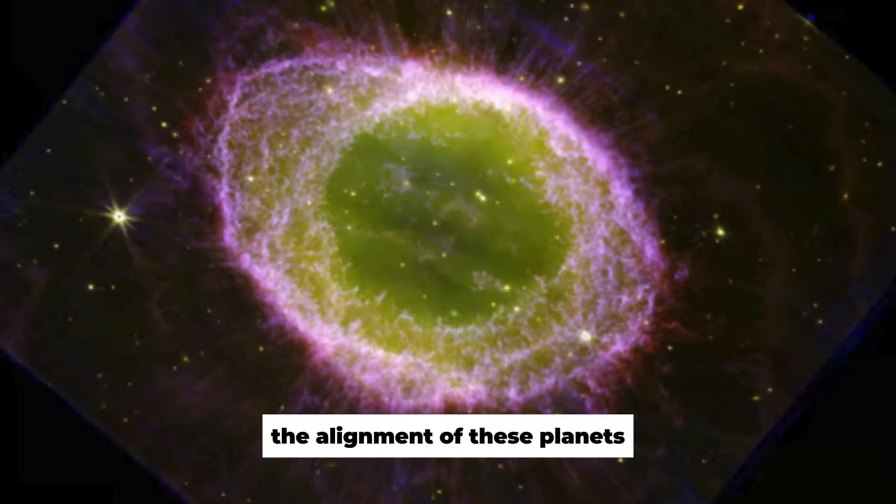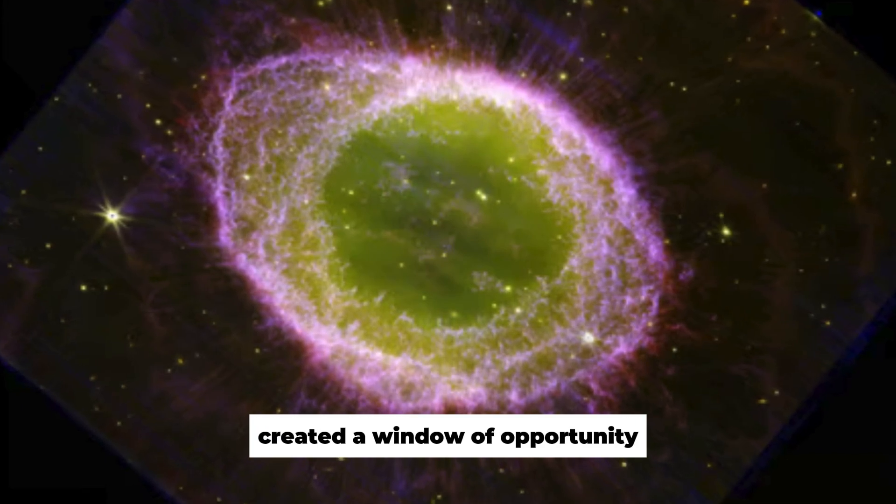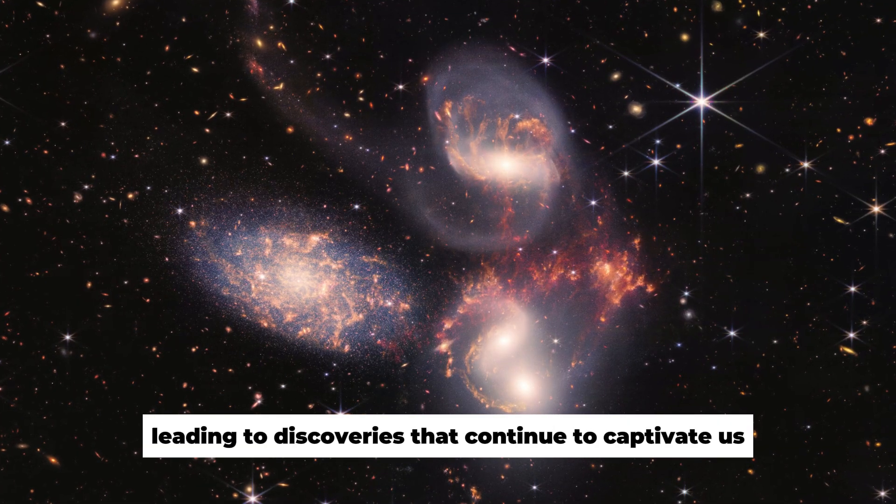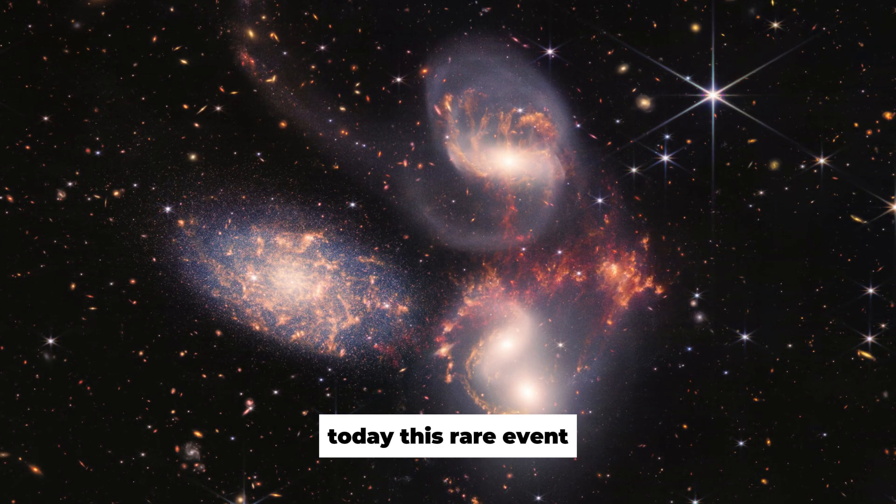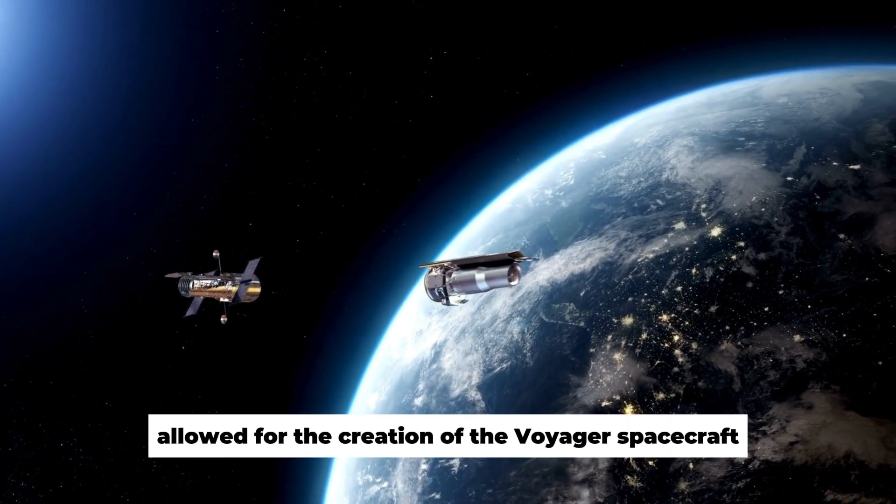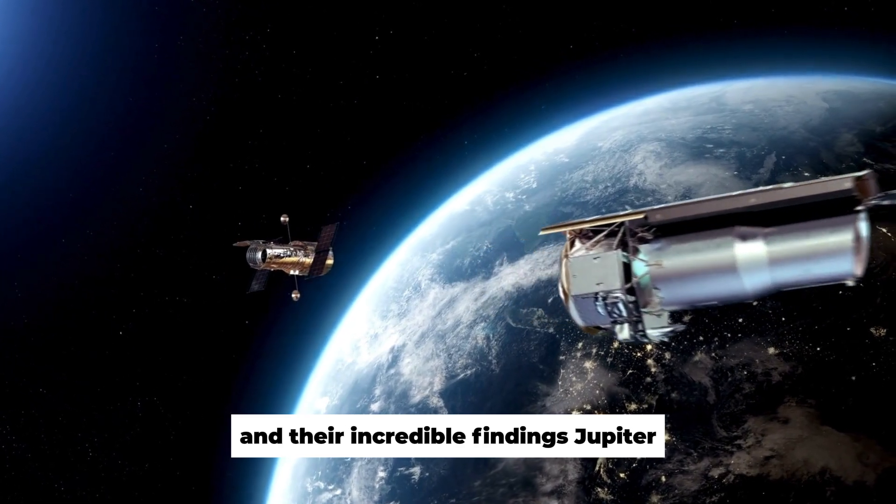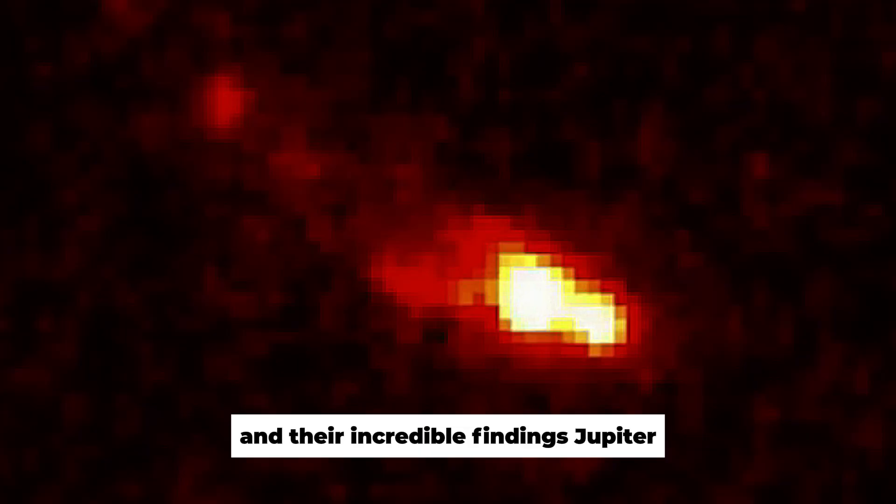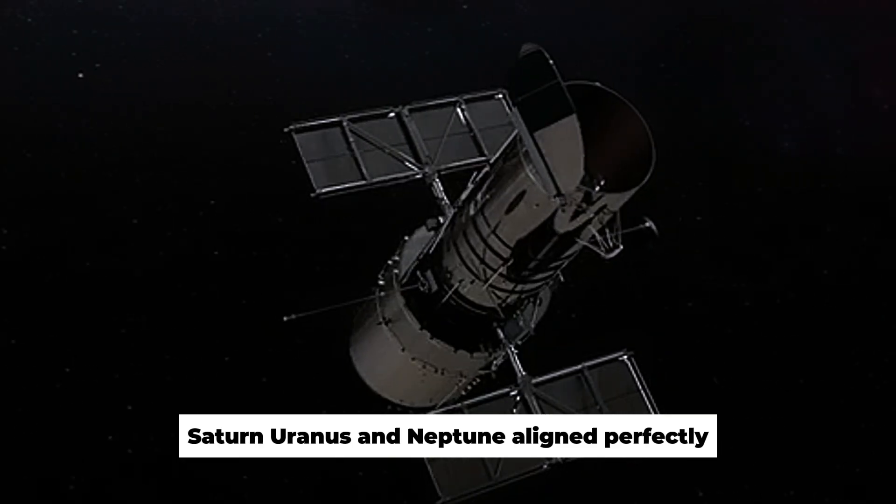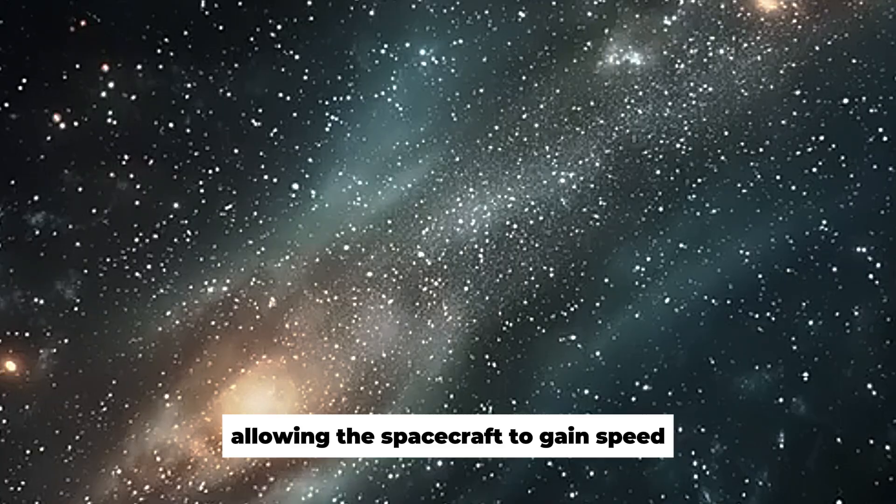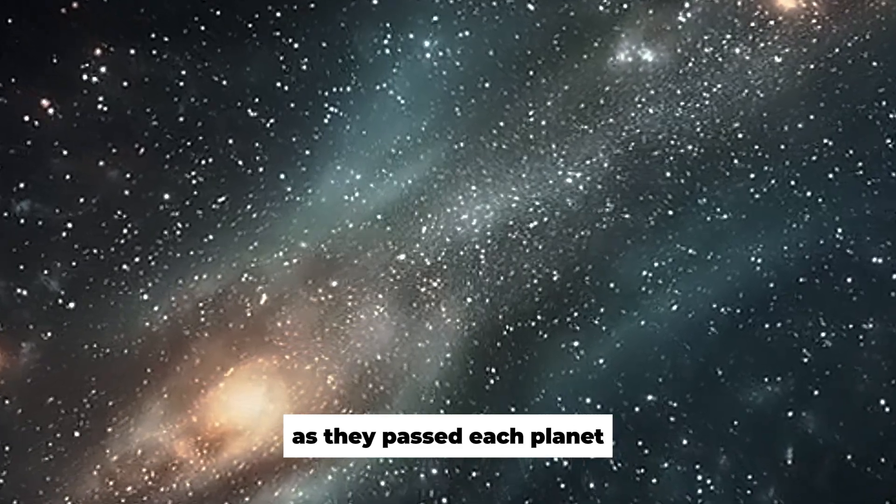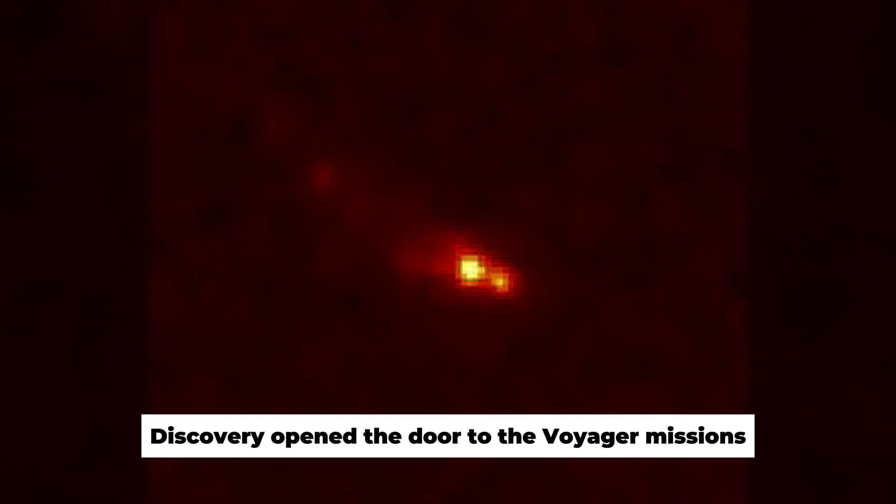The alignment of these planets created a window of opportunity for the Voyager missions, leading to discoveries that continue to captivate us today. This rare event allowed for the creation of the Voyager spacecraft and their incredible findings. Jupiter, Saturn, Uranus and Neptune aligned perfectly, allowing the spacecraft to gain speed as they passed each planet. Flandro's discovery opened the door to the Voyager missions, which have made a lasting impact on our understanding of the solar system.